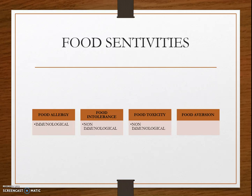For example, people who are lactose intolerant do not have enough lactase. Lactase is an enzyme that breaks down milk sugar lactose into smaller molecules that the body can absorb through the intestine. If this lactose remains in the digestive tract, it can cause spasms, stomachache, bloating, diarrhea, and gas.